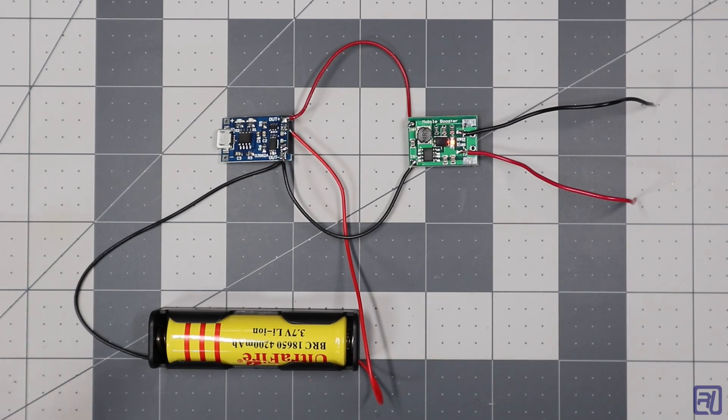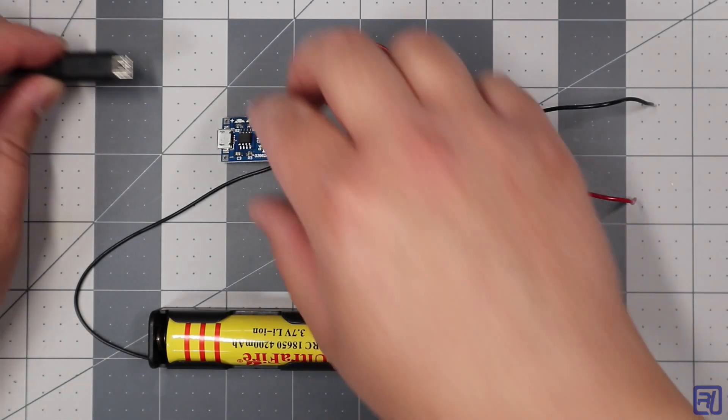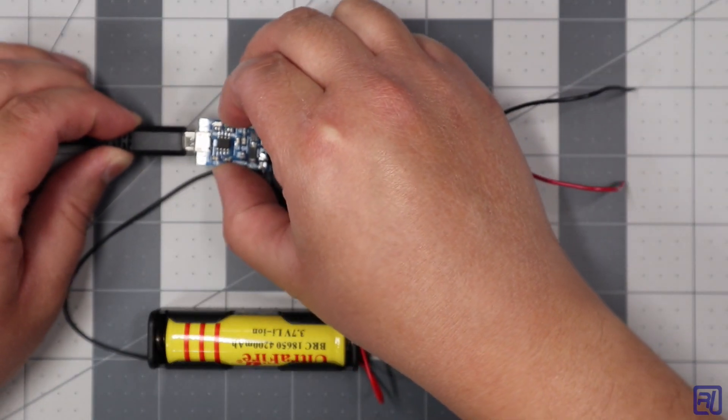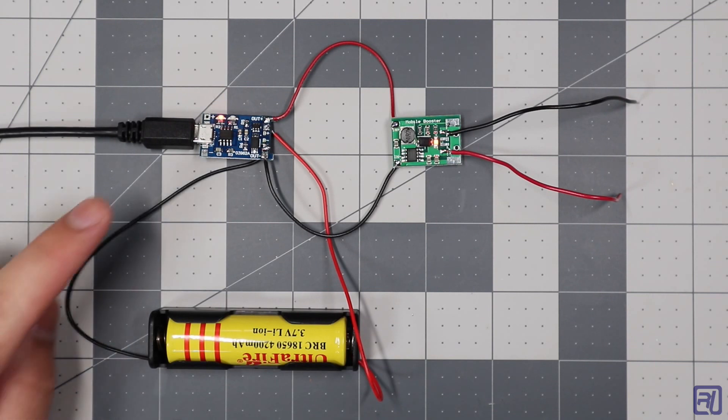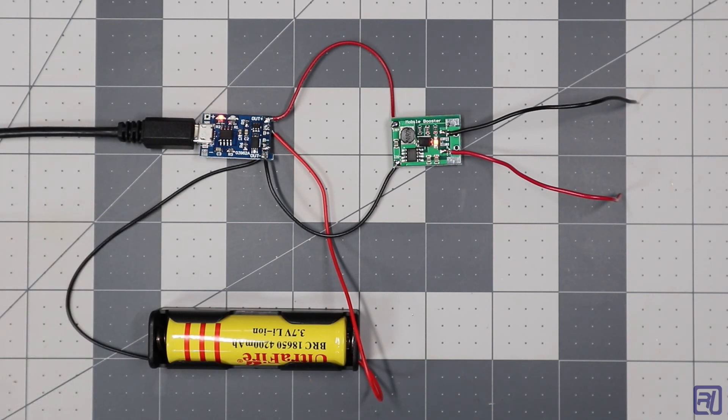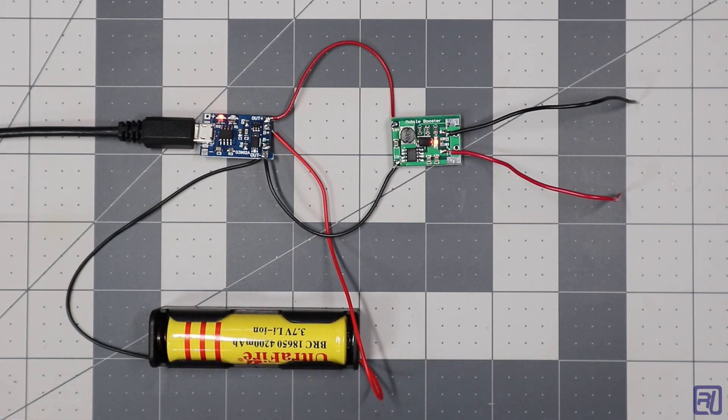So let me show you what happens when I connect the USB to the TP4056 charger. You can see the red LED turned on. So that's indicating that the 18650 is now getting charged.